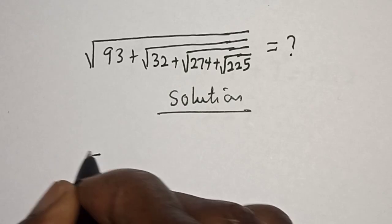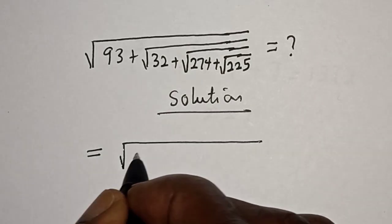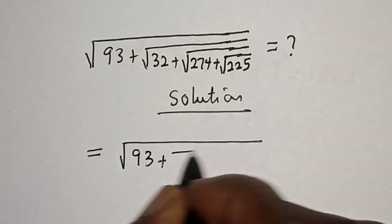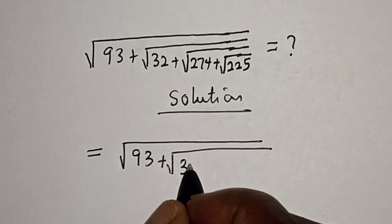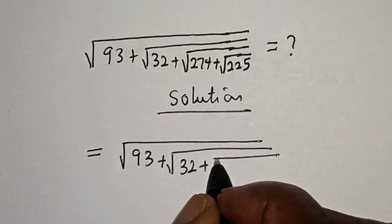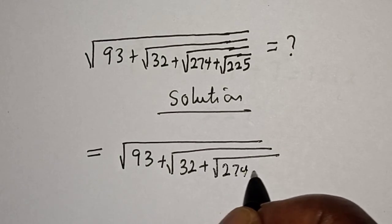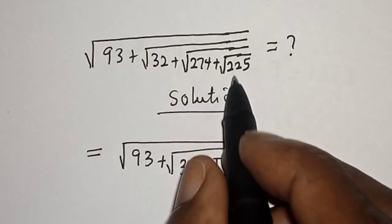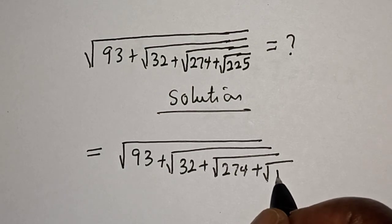Solution: the whole expression can be rewritten as square root of 93 plus square root of 32 plus square root of 274 plus square root of 225, which is the same thing as 15.